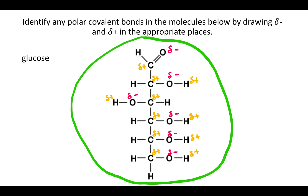These partial charges end up being very important because it's these partial charges that are going to attract one part of a molecule to another part of a molecule, making them stick together or react with each other. That's how you identify polar covalent bonds — bonds that have a slightly negative end and a slightly positive end — by drawing delta minus and delta plus.